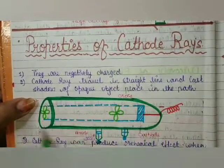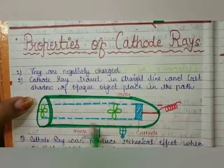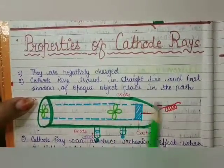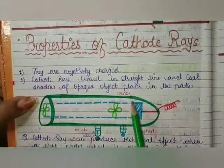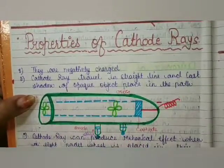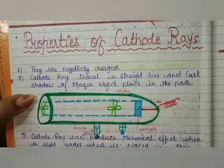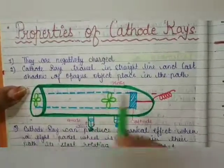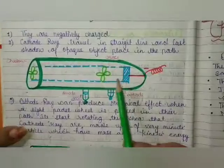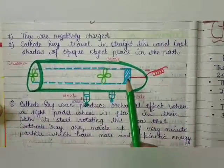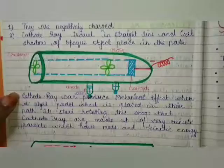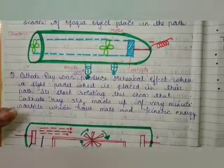In the discharge tube experiment, if we keep an opaque object, then the cathode rays travel in a straight line and produce a shadow. Cathode rays produce a shadow and run in a straight line.